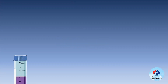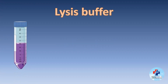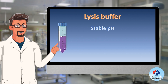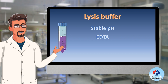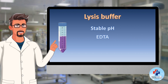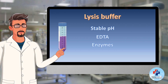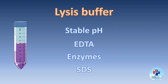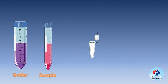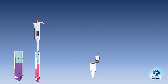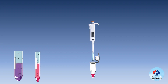The salt-out method starts with the cell lysis step. In this phase, a carefully crafted lysis buffer plays a pivotal role in dismantling cellular structures. The buffer maintains a stable pH essential for preserving enzymatic activity. It also contains EDTA, which serves as a chelating agent inhibiting nucleases that could degrade DNA. Enzymes including proteases work synergistically with detergents like SDS to break down proteins and disrupt the cell membrane. This orchestrated disruption ensures the efficient release of cellular contents, including DNA. The buffer, along with the sample, are added into a microtube and the mix is incubated so the components of the buffer can perform their functions.